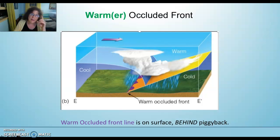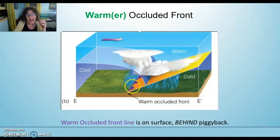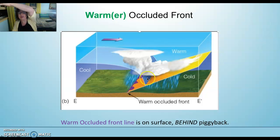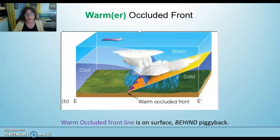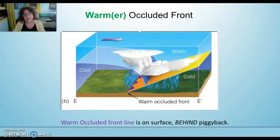Where is the occluded front line? The occluded front will always be at the surface — always purple with the half circles and triangles. But now it is behind the piggyback. The piggyback went up and in front, and the occluded line came through where the warm air met the cold air at the surface. For warm occluded fronts, the occluded front is behind the piggyback.